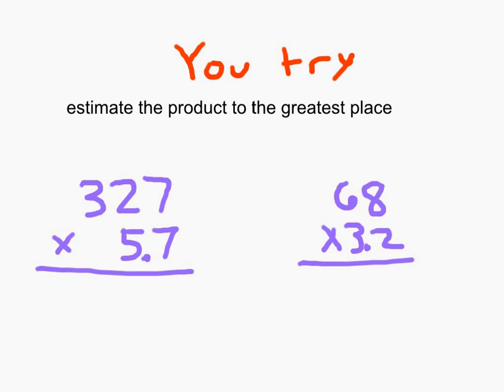All right. For this first problem, 327 greatest place is the hundreds place. So, that's going to round to 300. And 5 and 7 tenths goes to the nearest whole number, 6. 300 times 6 is 1,800. And that is our estimated product for 327 times 5.7.